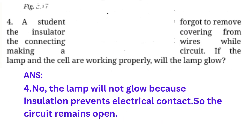Question number four: A student forgot to remove the insulator covering from the connecting wires while making a circuit. If the lamp and the cell are working properly, will the lamp glow? Answer: No, the lamp will not glow because insulation prevents electrical contact, so the circuit remains open.